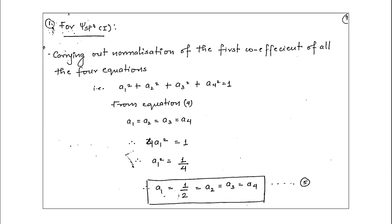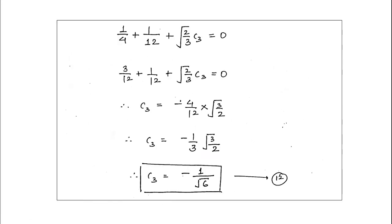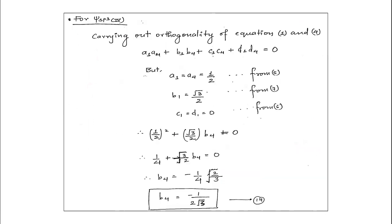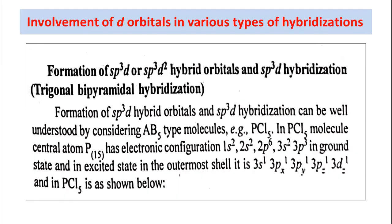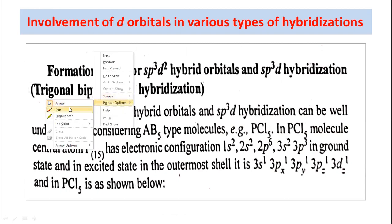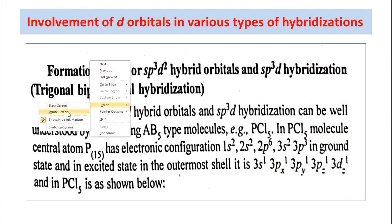Now let us discuss a few examples related to these hybridizations. Later on, we will discuss the involvement of d orbitals in various types of hybridizations. So let us first discuss some examples related to the hybridizations already covered.